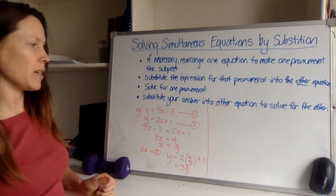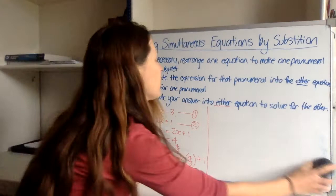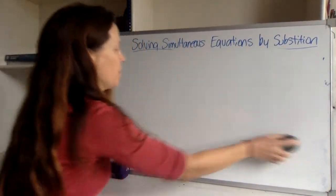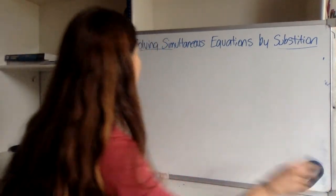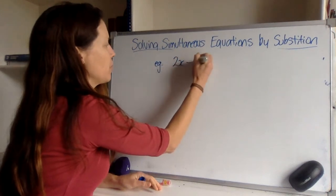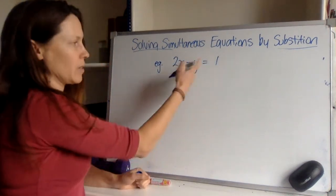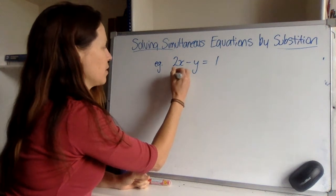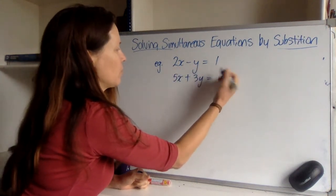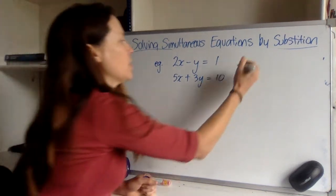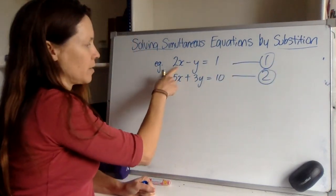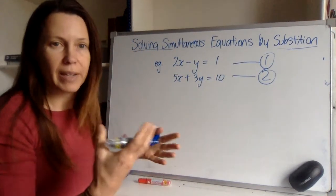Now to make it a little bit trickier, sometimes you won't have one of your pronumerals sitting there all by itself. You might not have either of them on their own. So let's look at a tougher example. Let's say we have both pronumerals just in amongst other things here, and perhaps this one is 5x plus 3y is equal to 10.